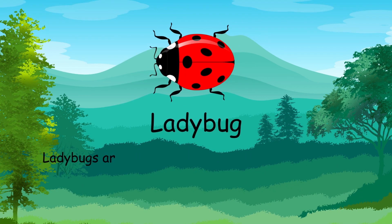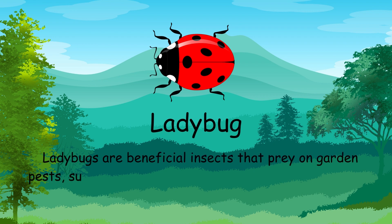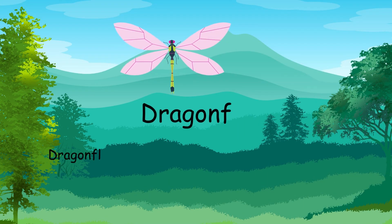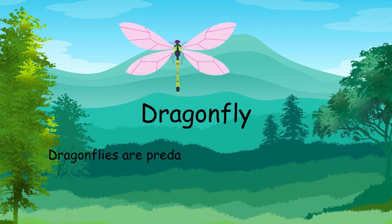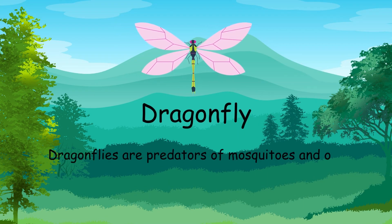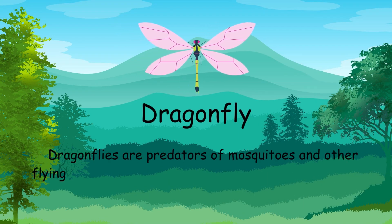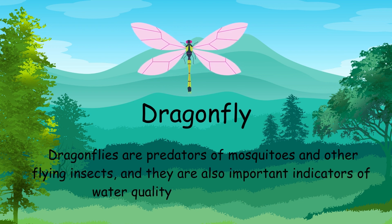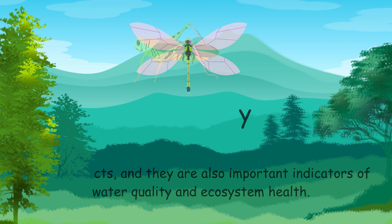Ladybugs are beneficial insects that prey on garden pests and are often used as natural pest control agents in agriculture. Dragonflies are predators of mosquitoes and other flying insects, and they are also important indicators of water quality and ecosystem health.